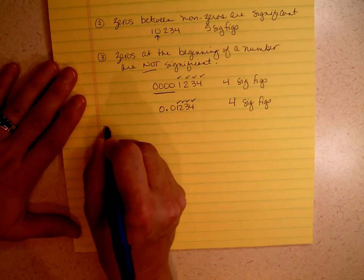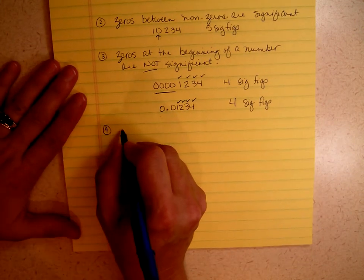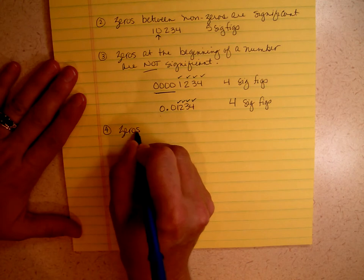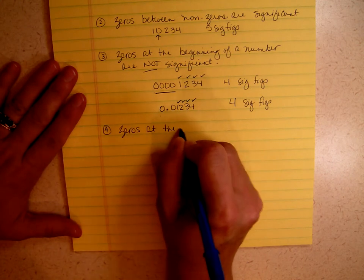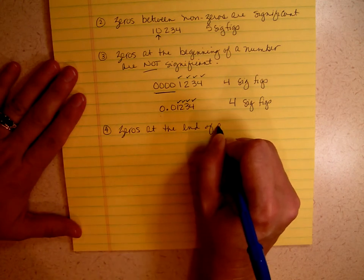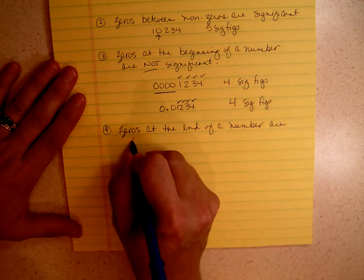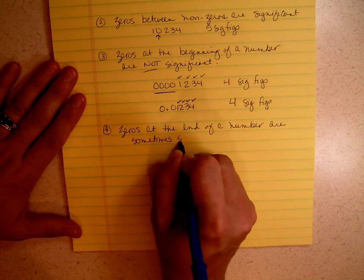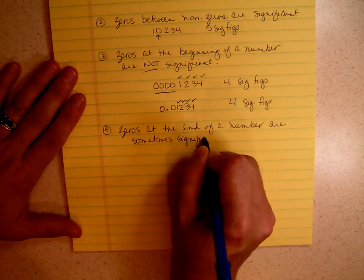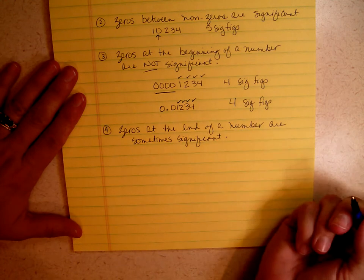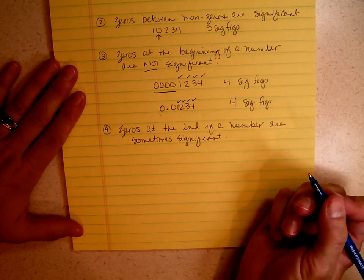So that leaves us with the zeros at the end of a number. The zeros at the end of a number are sometimes significant. Oh my gosh, what does that mean? Well, that means there's another rule.